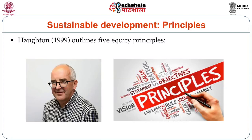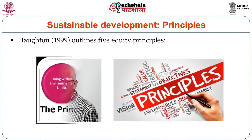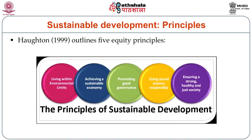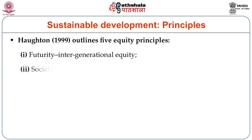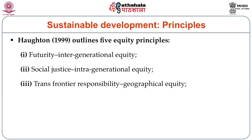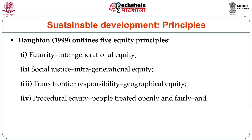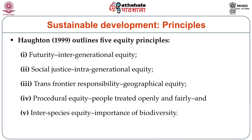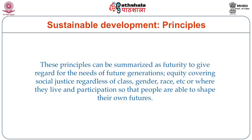Let's move on to the principles of sustainable development. Hatton in 1999 outlines five equity principles. The first one is futurity — intergenerational equity. The next is social justice — intragenerational equity. The third principle is trans-frontier responsibility, which is geographical equity. The next is procedural equity — people treated openly and fairly. And the final principle is interspecies equity, highlighting the importance of biodiversity.